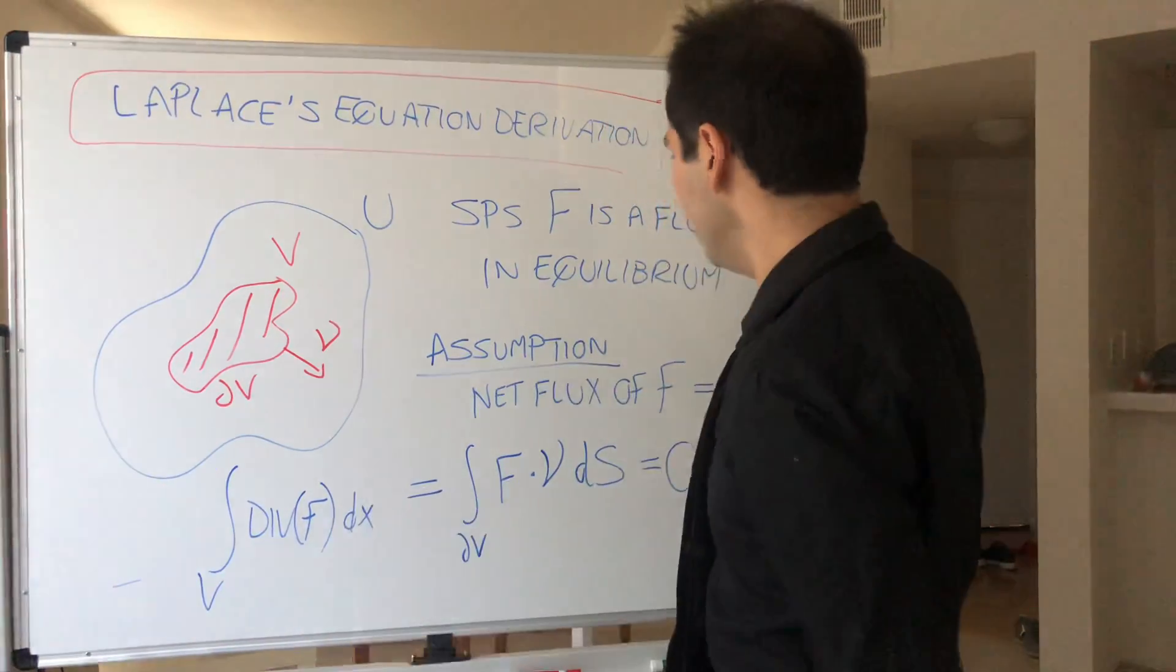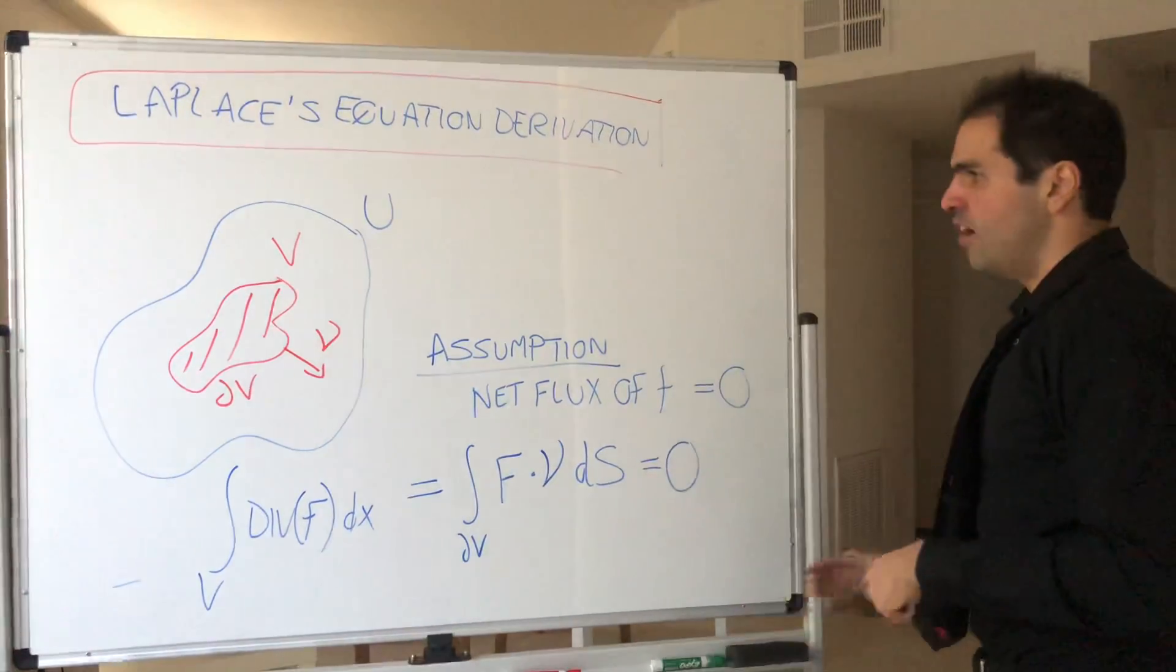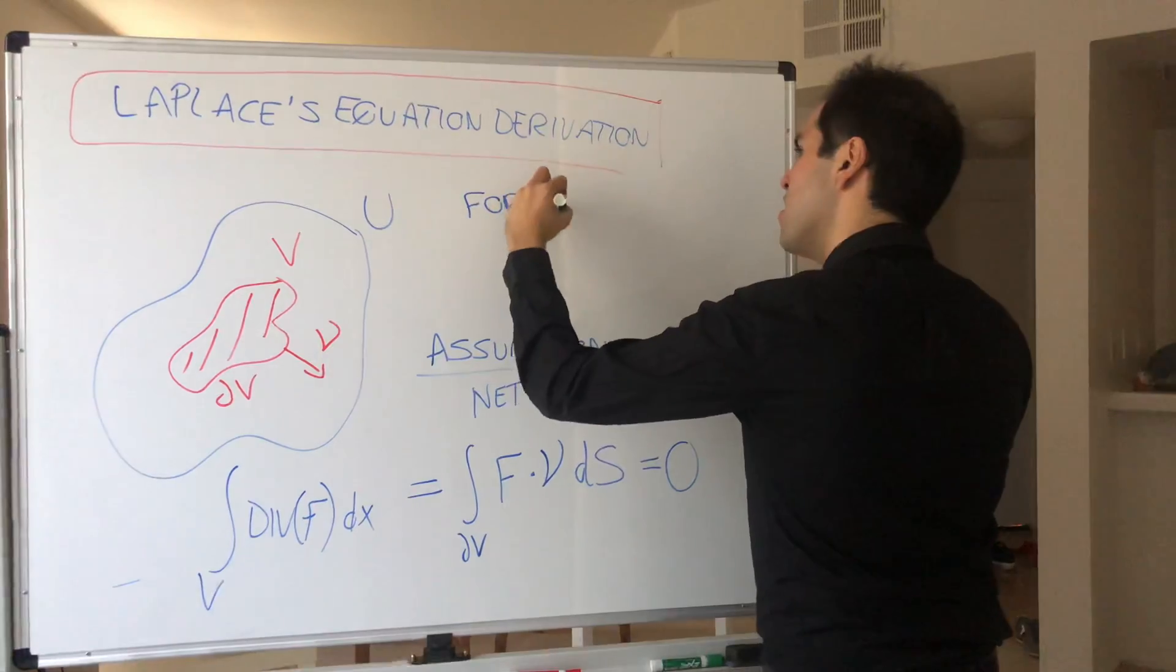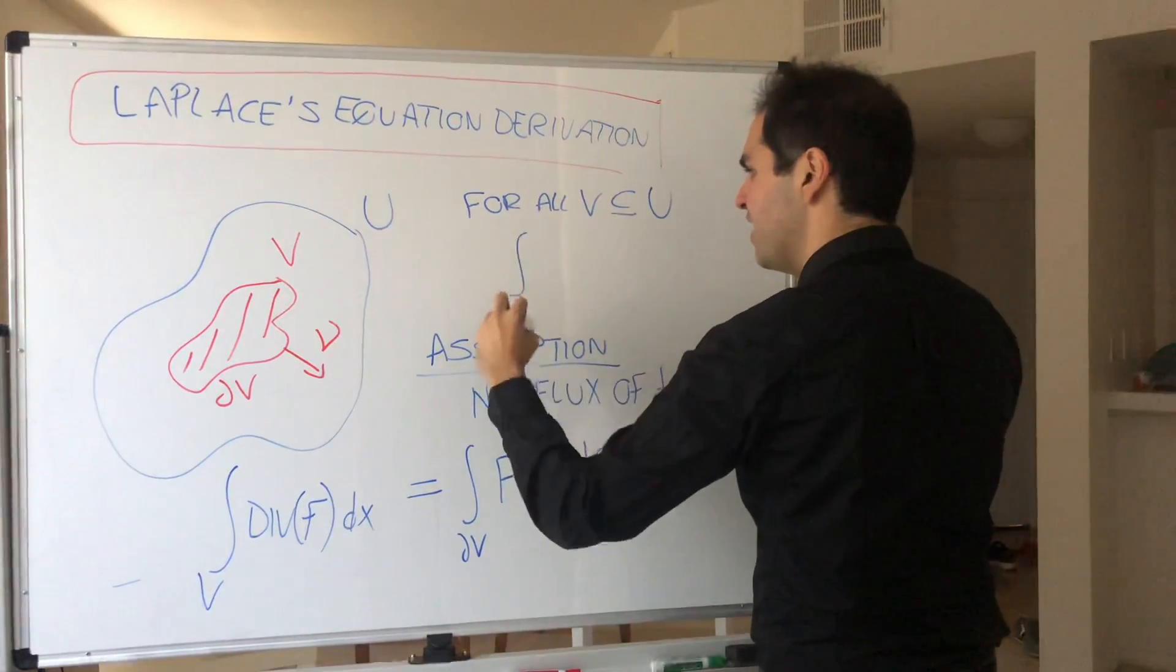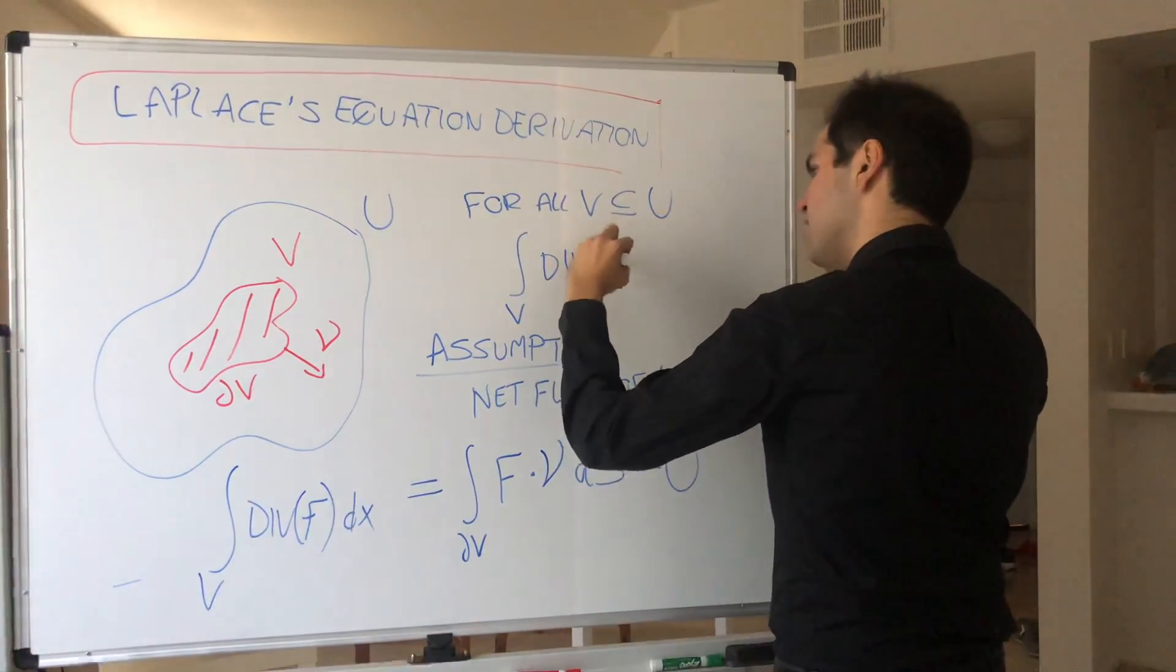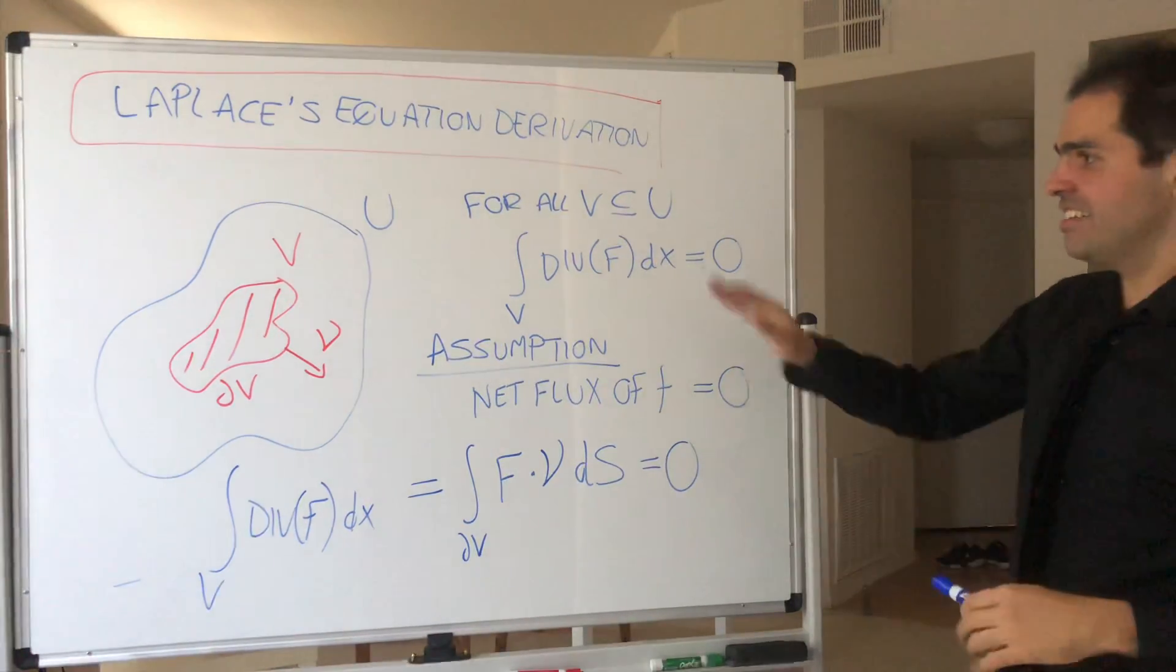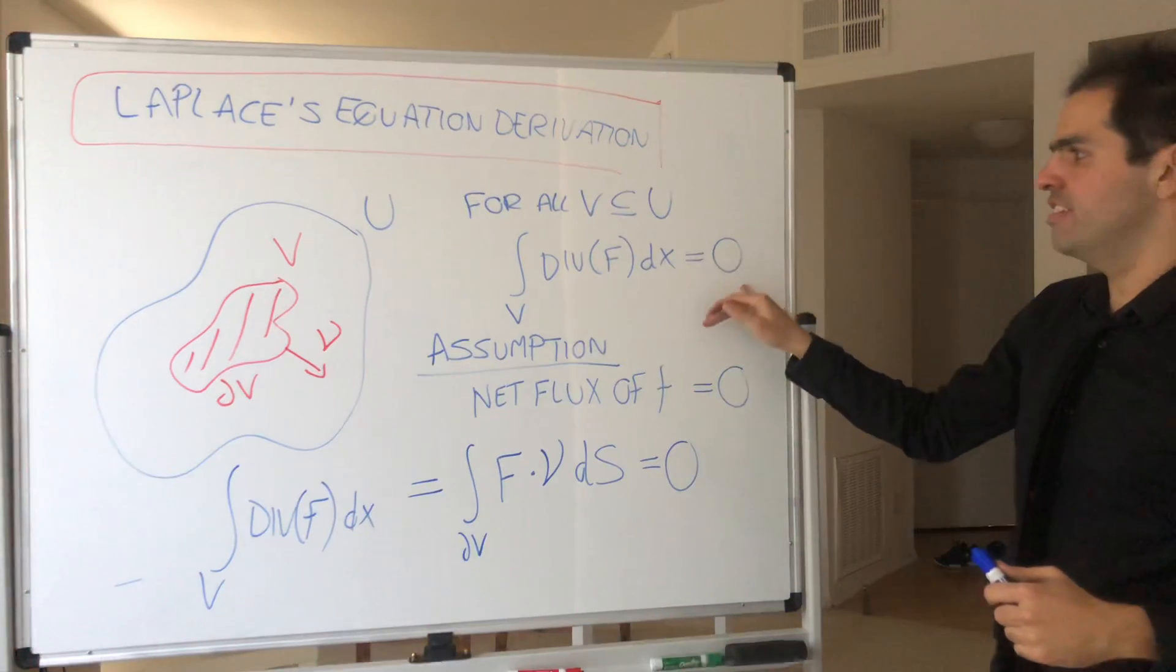So, in other words, what we have in the end is as follows. So we know for all V subset of U, we get that the integral of the divergence of F dX equals zero. And the nice thing is, no matter what region we have, the integral of the divergence of F is zero,